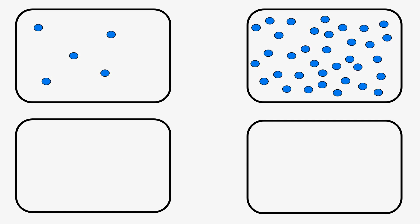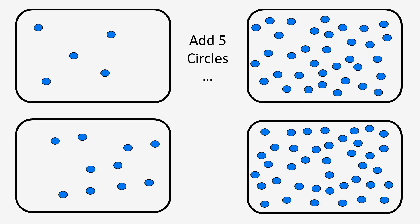Here's another example with circles. Starting with a small group, when five circles are added below, you can see a pretty big difference. But starting with a large group of circles and adding those same five, you don't detect the change nearly as much. On the left with a small starting amount, the five additional circles are very noticeable; on the right with a larger starting amount, those five circles are much harder to detect.